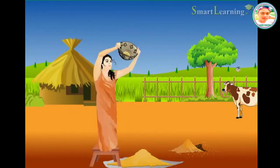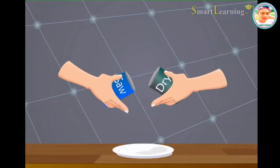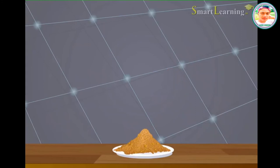Let us now perform an activity to learn this process in detail. Make a mixture of dry sand with sawdust and keep it on a plate or newspaper.